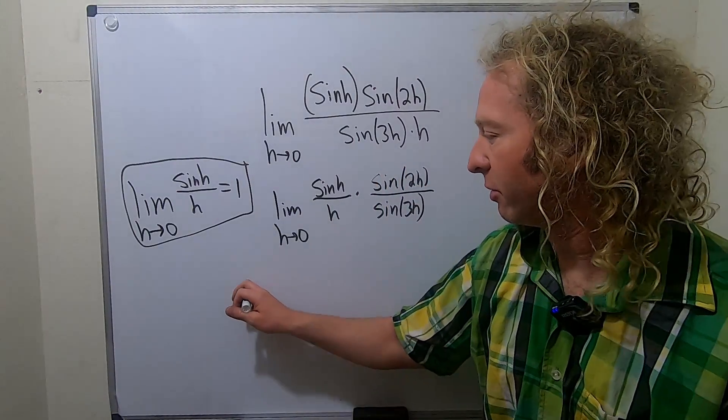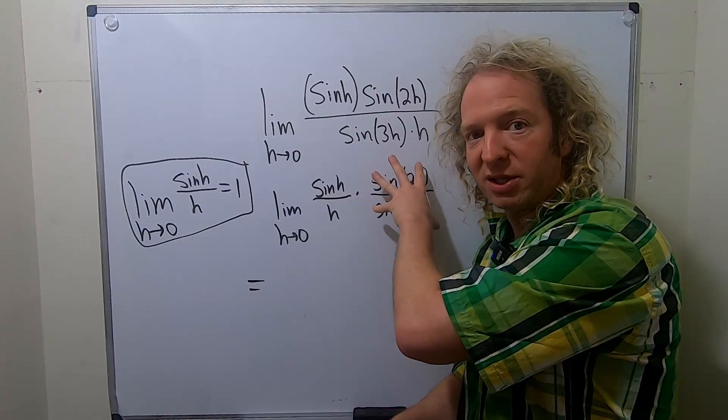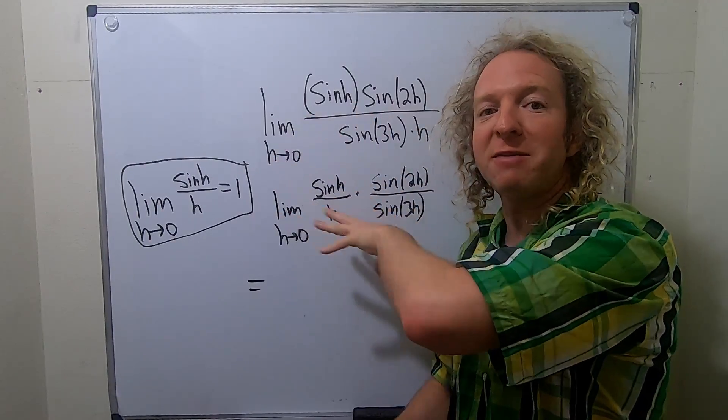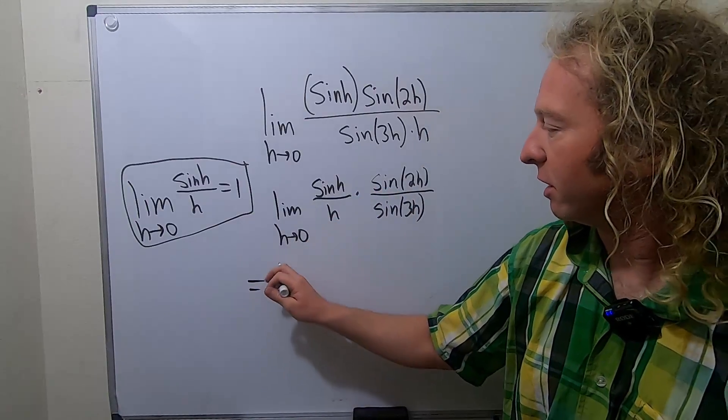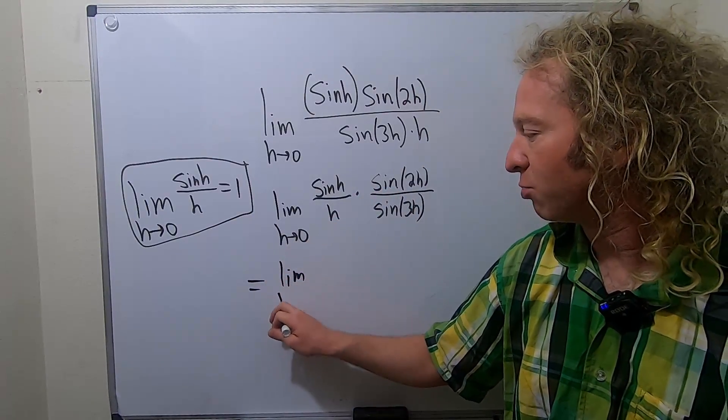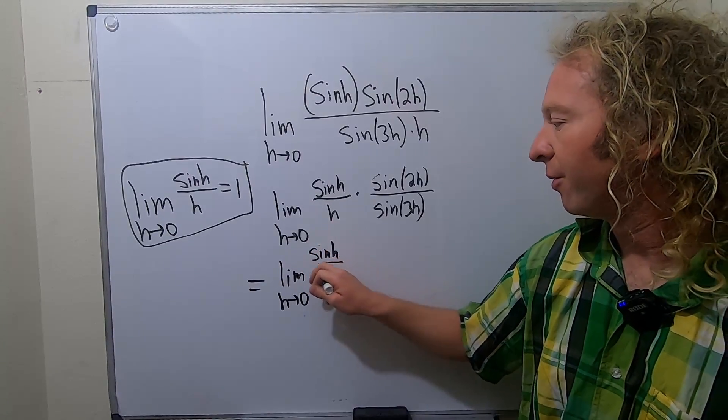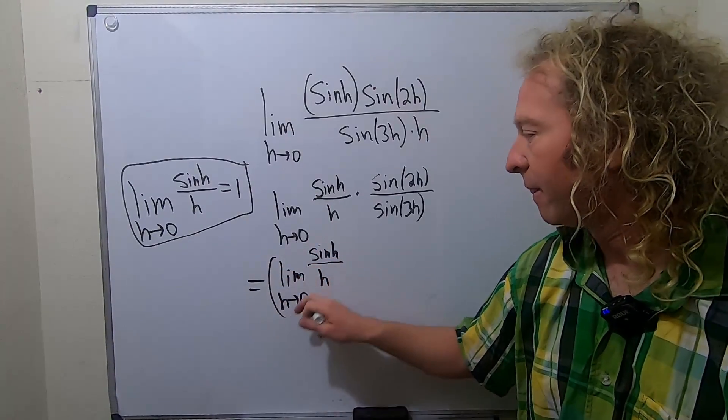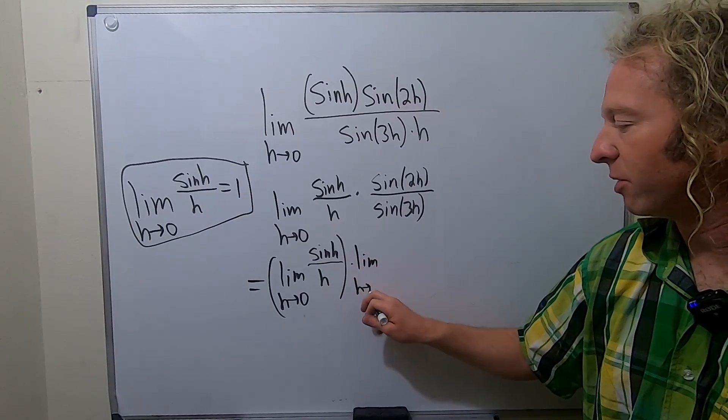So let's go ahead and do that. This is going to be, and this limit will exist. This limit is 1, and we'll show that this one exists at the end as well. We'll show that all the limits at the end exist, so that all of this mathematics is actually correct. So this is the limit as h approaches 0 of the sine of h over h times, and then let's work with this limit here. This is the limit as h approaches 0.